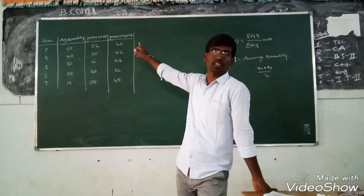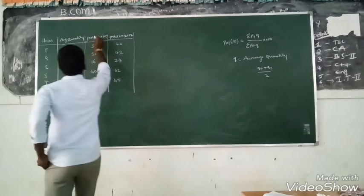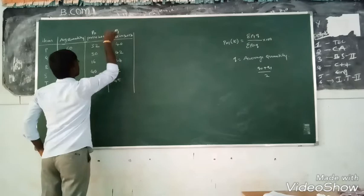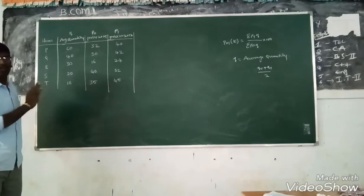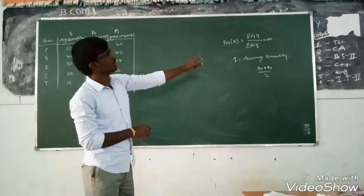We have the price: 2015 price and 2017 price. What is the base year? 2015 is the base year, that is P0. What is the current year? 2017, that is P1. Here average quantity, that is Q only, not Q1, not Q0. Now this quantity determines here, Q.